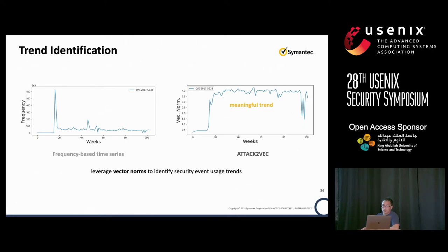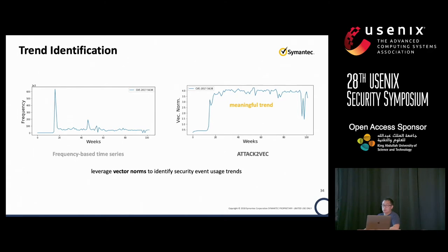The second analysis task is trend identification. To the left-hand side, that's a frequency-based time series analysis — you will see a spike and probably a second spike over time. The attack vector method leverages vector norms to identify security event usage in a more meaningful way. You will see the spike here corresponding to the spike in the time series, and the usage will be reasonably stabilized because Apache Struts has been a very popular attack vector. Comparing to the time series, this one is more stable and shows the trend — it's a stable trend, ignoring all the velocity from the frequency side.